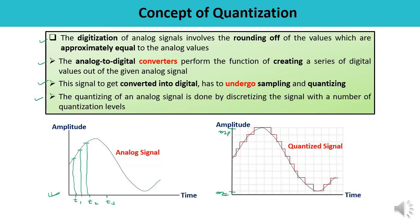To accomplish this, the original signal XT, which lies in a particular range, is partitioned into L different levels. Accordingly, you can calculate the magnitude of each level. Each sample is then approximated or rounded off to the nearest quantized level. Since each sample is approximated to one of the L numbers, the information is effectively digitized. This is the basic concept of digitization.